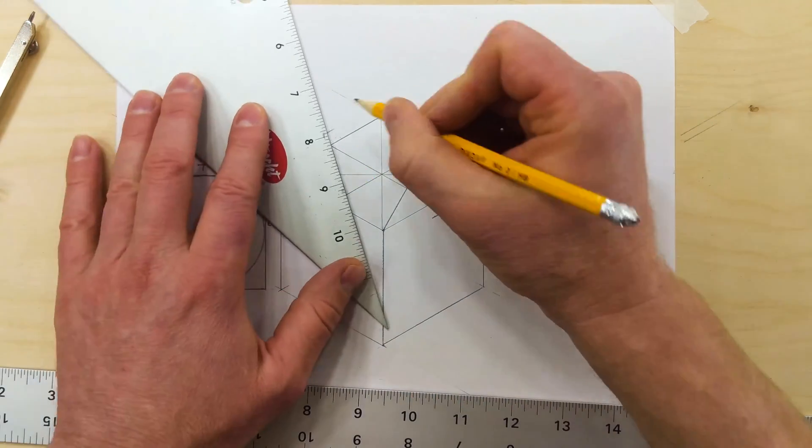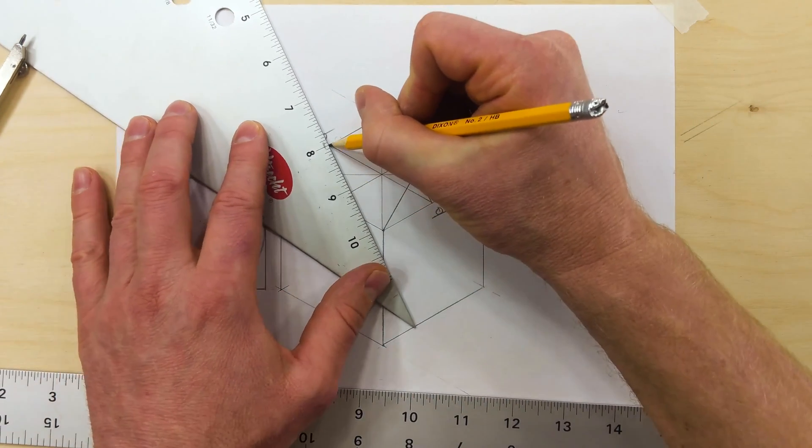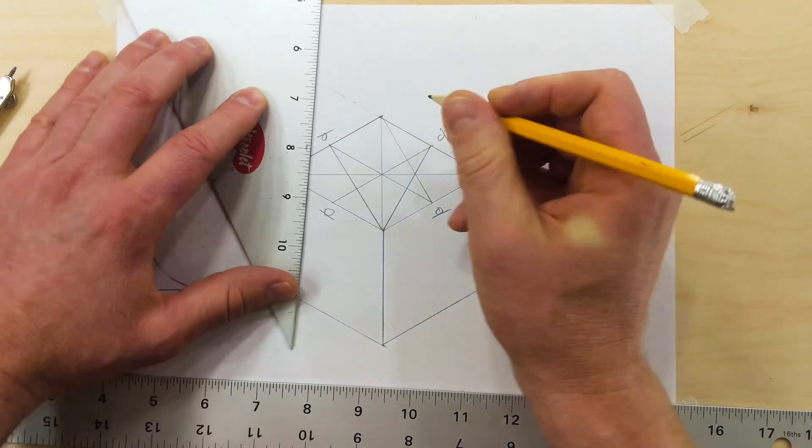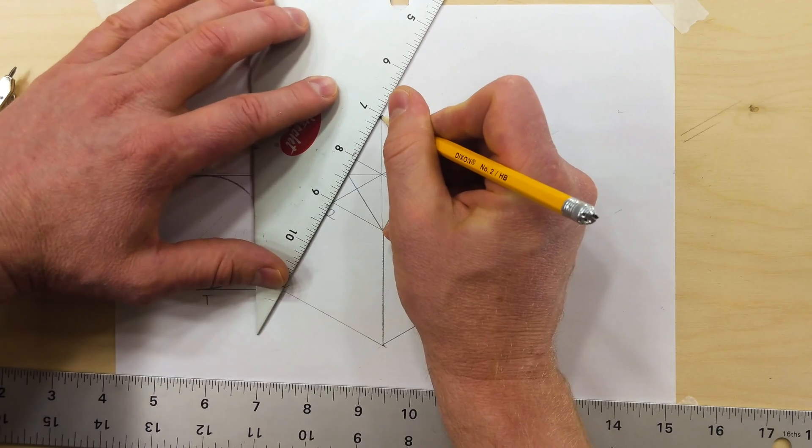We do the same for this side. Go from the tangent point to the far corner and then from this far corner to this tangent point.